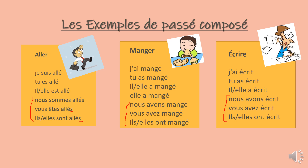For verbs conjugated with être in passé composé, we add an S at the end of all plural forms. Manger is conjugated with avoir since it's not part of the Dr. Mrs. Van der Tramp verbs: j'ai mangé, tu as mangé, il ou elle a mangé, nous avons mangé — no exception at the end — vous avez mangé, ils ou elles ont mangé. With écrire, again no exception: j'ai écrit, tu as écrit, il ou elle a écrit, nous avons écrit.